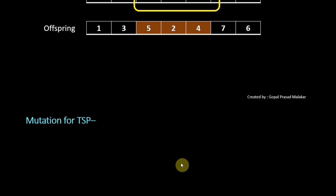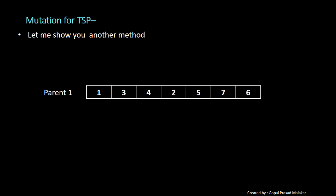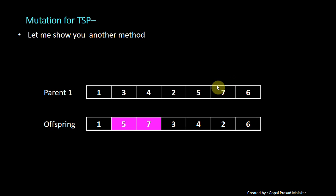Let me show you one more example of mutation. You can take a portion, let's say 7, 6 or 5, 7, and you can put it here and shift everything to the right side. So 3, 4, 2 came this side. That's another offspring.